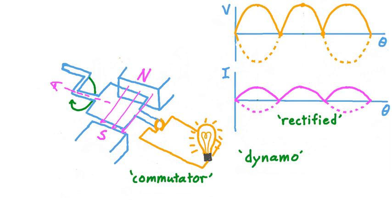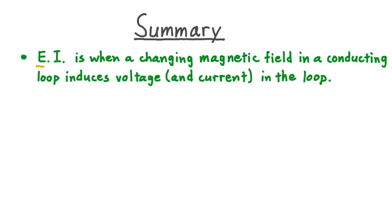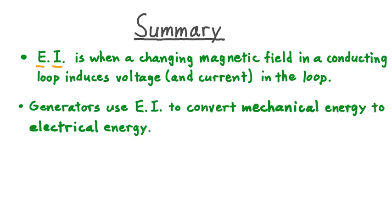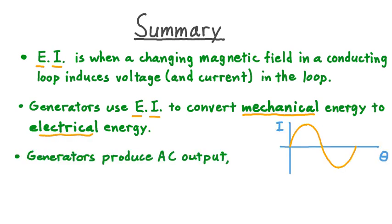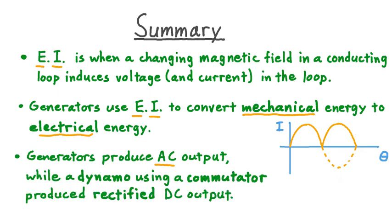Let's take a moment to summarize what we've learned about electromagnetic induction in generators. Electromagnetic induction is when a changing magnetic field in a conducting loop induces voltage, and therefore current, in the loop. Generators use electromagnetic induction to convert mechanical energy into electrical energy. Generators produce AC output — alternating current — while a device called a dynamo, which uses a commutator, produces rectified DC output where all current values are non-negative, either zero or positive.